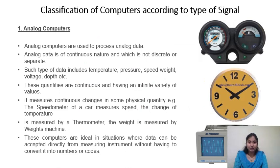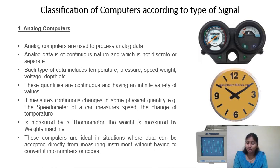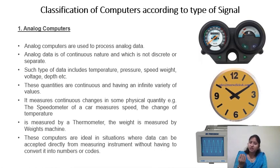The first classification is based on the type of signal used. There are three types: analog, digital, and hybrid. Analog computers, as the name suggests, are familiar devices — the speedometer in a car or bike, or the watch we use at home, are examples of analog computers because they calculate speed, temperature, and time.